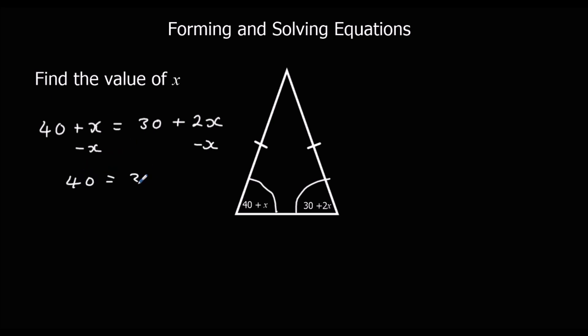and 30 plus 1x on the right side. Then I want x by itself, so I'm going to take away 30 from both sides. 40 minus 30 is 10, and that leaves us with x. So x equals 10.